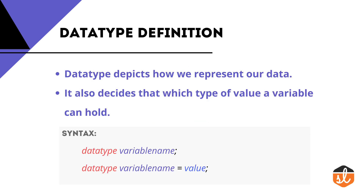Let's move towards the first topic, which is the data type definition. The first question that comes to mind is: what is a data type? A data type depicts how we can represent our data, and it also depicts which type of value a variable holds. In further sessions we will discuss the concept of variables, but for now concentrate only on the data type part.